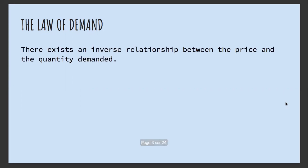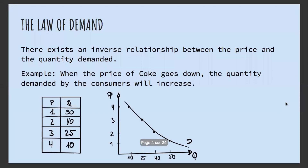The first thing we're going to talk about is the law of demand. The law of demand says that there exists an inverse relationship between price and quantity demanded. For example, when the price of Coke goes down, the quantity demanded by consumers will increase. As you can see on this table, when the price is one, the quantity demanded is 50, but when the price is four, the quantity demanded is only 10.